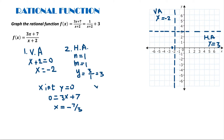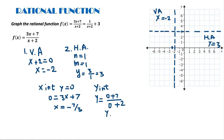Now let me look for the y-intercept. For the y-intercept, I plug 0 in for x: 3 times 0 is 0 plus 7, over 0 plus 2. So that gives us 7 divided by 2, which equals 3.5. So y equals 3.5, and 7 over 2 is 3.5, which is the y-intercept here on the graph.